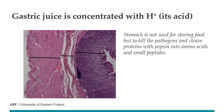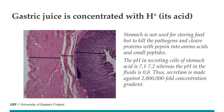Let's start with the stomach. The gastric juice is very acidic, so the stomach is not only used for storing food but its acidity kills pathogens. In this acidic environment there is an enzyme called pepsin that cleaves proteins into amino acids and small peptides. This gastric juice is secreted by certain cells, and inside the cell the pH must be around 7.